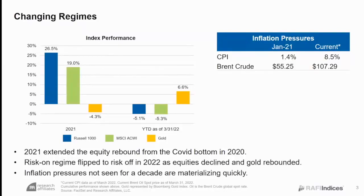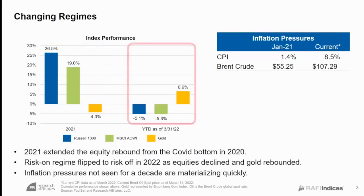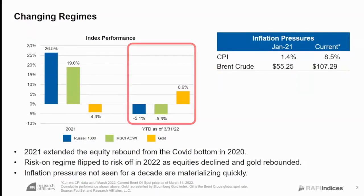To set the stage, let's take a quick look at recent market movements. Last year, equity markets extended the rebound from COVID lows of 2020. Global equities saw exceptionally strong performance while investors abandoned risk-off assets such as gold. The first quarter of 2022 has turned this dynamic on its head — investors flocked back to gold while equities declined. While the war in Ukraine may have been a catalyst, there are also increasingly challenging macro trends in the form of substantial inflation pressures.